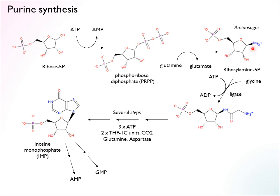Now that we have the amine group on, we're ready to start building the nucleobase. The first reaction uses ATP — it's a ligase that ligates a glycine, another amino acid, onto this position. So we've already built out two carbons and two nitrogens of what's going to be the nucleobase. Then there are several steps like this, where we ligate or add several atoms more to build the ring of the purine. It's a fascinating pathway but a bit much to go through. This is energy-demanding — several of these reactions require ATP, three ATP in total.